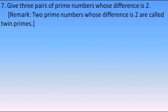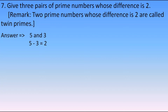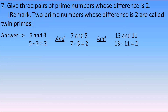The seventh question: give three pairs of prime numbers whose difference is 2. Such prime numbers are called twin primes. The three pairs are: 3 and 5, 5 and 7, and 11 and 13. These are three pairs of prime numbers whose difference is 2.